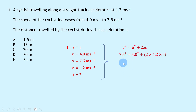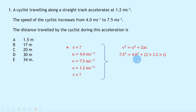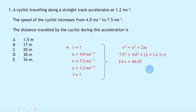Substituting in the numbers gives 7.5² = 4.0² + 2 × 1.2 × S, which simplifies to 2.4S. Taking away 4.0² from both sides gives 2.4S = 40.25, so dividing both sides by 2.4 gives S = 17 metres, which is answer B.